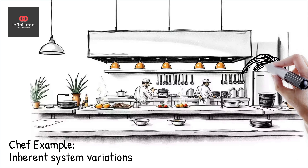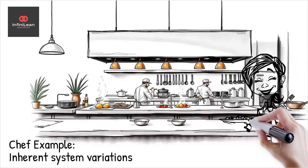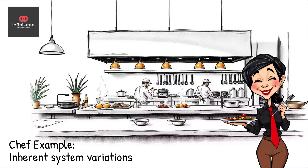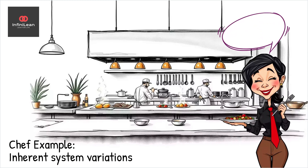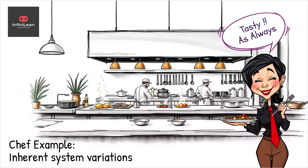Imagine you're a chef preparing a favorite dish. Even when following the recipe perfectly, minor variations can occur — these could be slight differences in ingredient quality or subtle changes in cooking temperature. These are examples of common cause variation. They're not due to any specific error or mistake, but stem from the natural variability in the process.